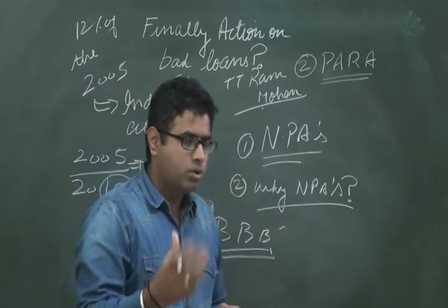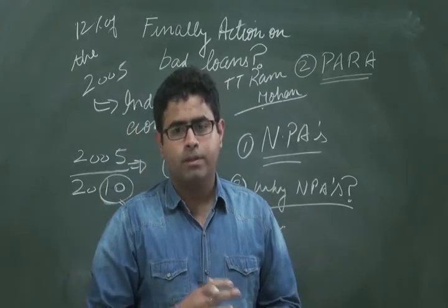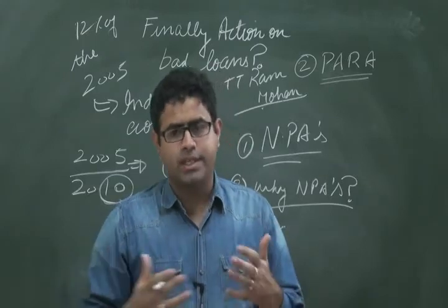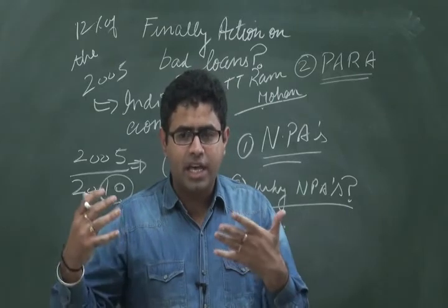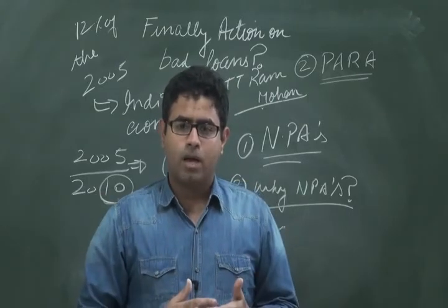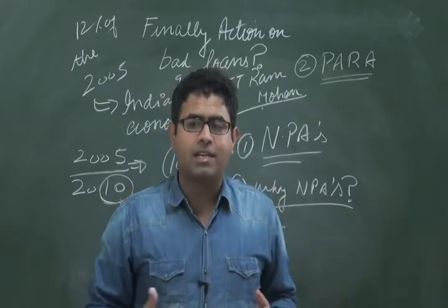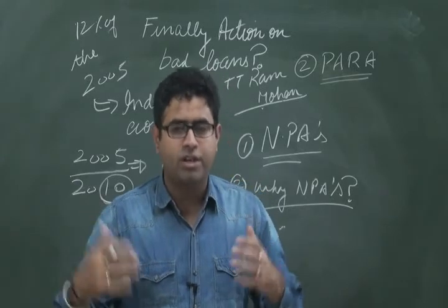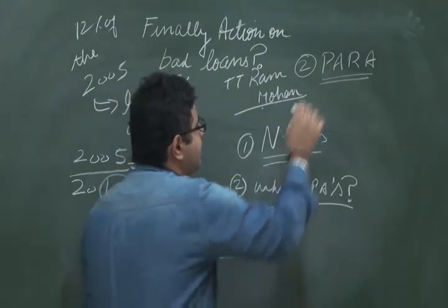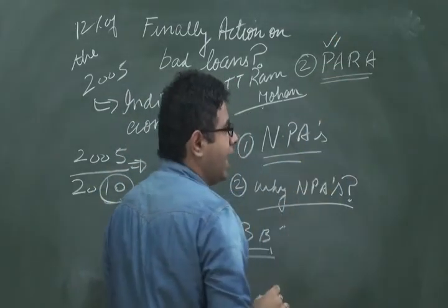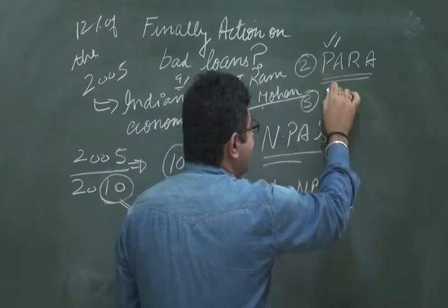When it comes to the negotiation process with people who are on the verge of defaulting on bank loans, bank officials generally abstain from indulging in any negotiation or asking them to pay a lesser amount, because they fear that the Vigilance Commission or the Comptroller and Auditor General will act against them. So it is important for India that it should be instituting an agency like PARA as soon as possible.